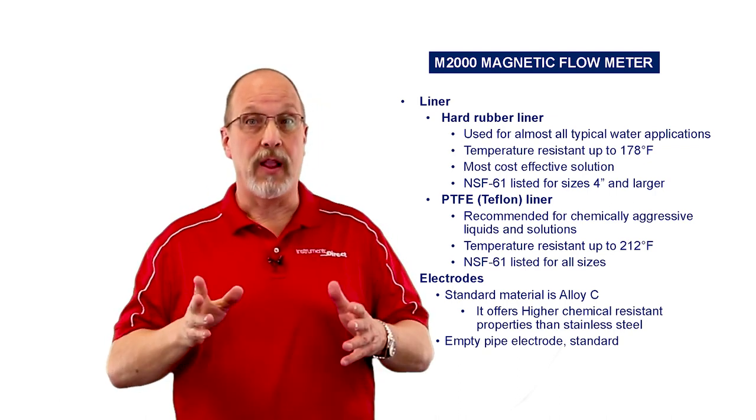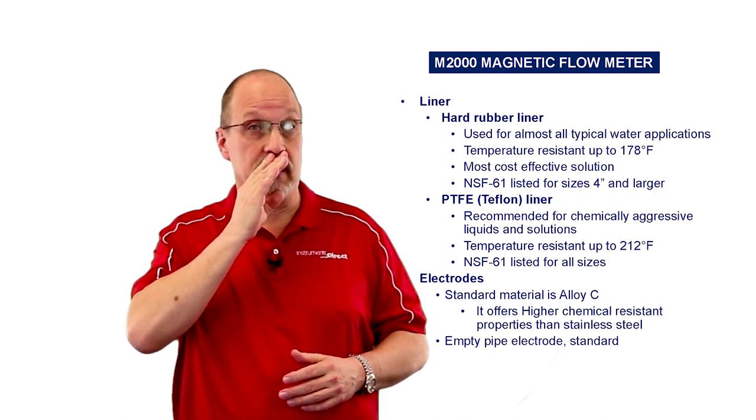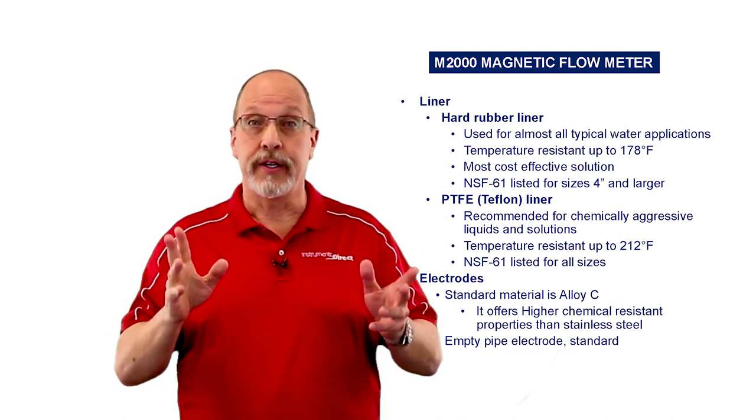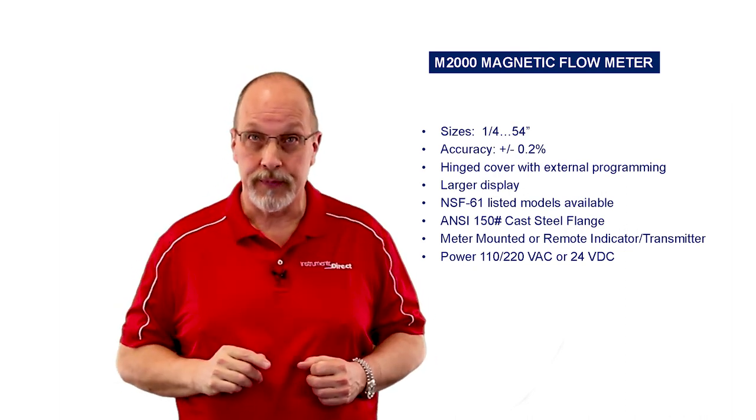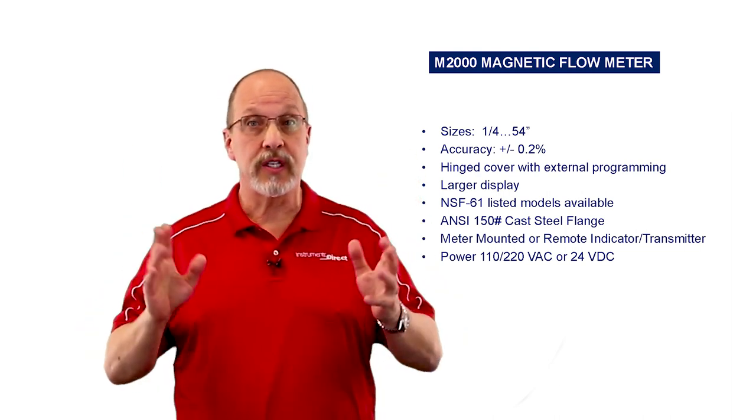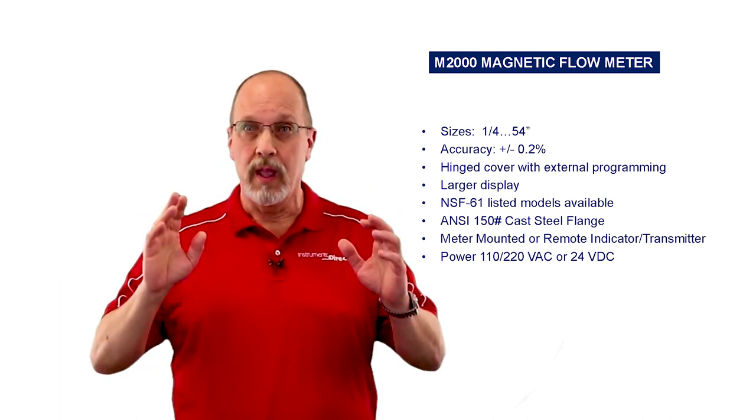The electrodes are made out of Alloy-C, which is the same club as Hastelloy-C. In addition, we'll also alert you when you have an empty pipe condition. The M2000 is available in sizes from a quarter of an inch to 54 inches with accuracies of 0.2%. And it's easy to program with a few buttons and offer quite a large digital display in just about any engineering unit that you want. It has 150-pound ANSI flanges. And as I indicated before, the transmitter is available in integral mount or remote.